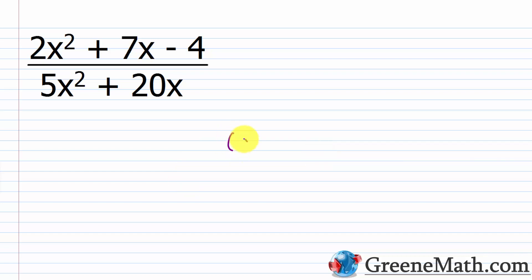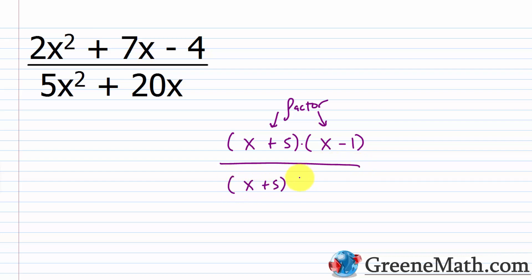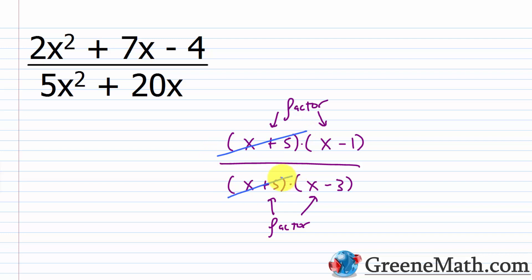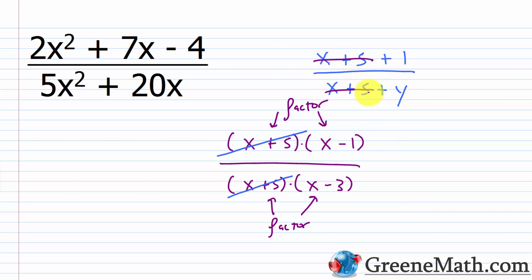For example, (x + 5)(x - 1) over (x + 5)(x - 3): here x+5 and x-1 are factors, x+5 and x-3 are factors, so x+5 in the numerator and x+5 in the denominator can be canceled. But if you had something like (x + 5 + 1) over (x + 5 + y), you cannot cancel the x+5 terms because they're connected by addition, not multiplication. It must be canceling common factors.